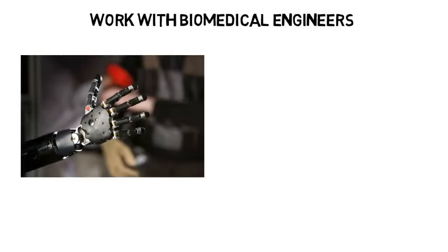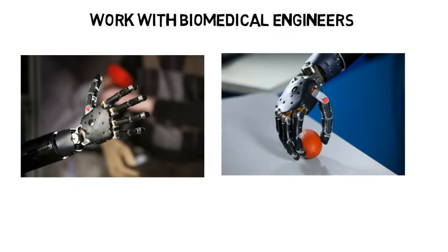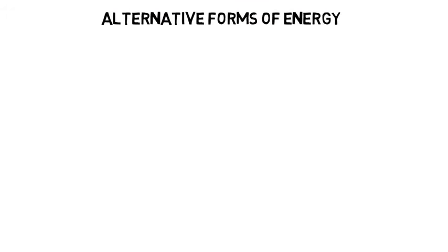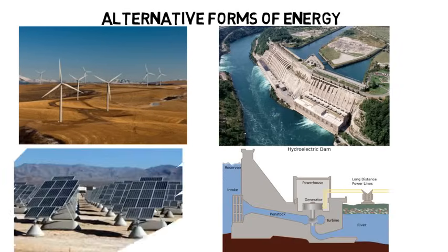A mechanical engineer could also work with biomedical engineers on things like prosthetic body parts. They might need to help make sure the mechanism is strong enough to withstand the forces they'll have to put up with. Or they might have to decide what's the best material to use. Mechanical engineers can also work on alternative forms of energy, like on wind farms, hydroelectric, solar, and more.